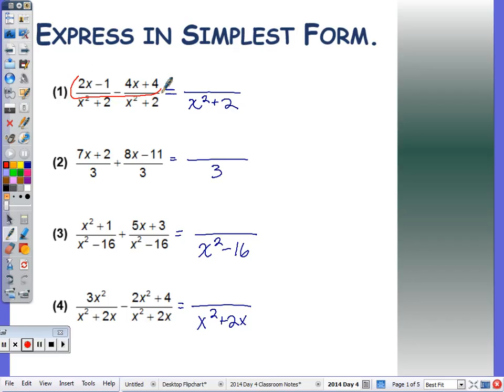And then I go through and combine all the numerators. In this case here, when I'm subtracting, you want to make sure that you distribute the negative all the way through. So this is negative 4x minus 4. Now combining 2x minus 4x, we get negative 2x. And negative 1 minus 4 is negative 5.